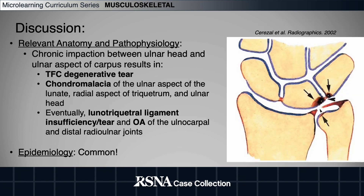Ulnar impaction is common and generally occurs sequentially as a result of repetitive loading of the ulnar aspect of the wrist. This affects the horizontal portion of the TFC, which acts as a cushion for the ulnar carpus, and causes chondromalacia of the ulnar aspect of the lunate, radial aspect of the triquetrum, and ulnar head.